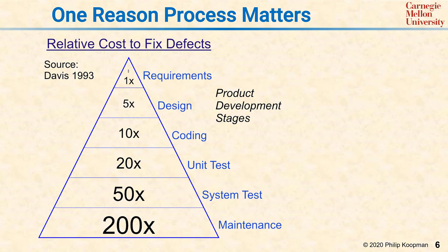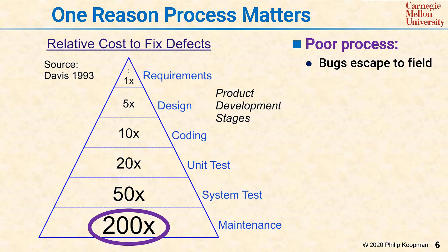Bugs introduced later, such as a coding bug, similarly multiply out depending on how long it takes to fix them. That sets aside the cost in brand tarnish and other issues that can be a real problem if you ship bugs out to the field. If you have poor process, you're likely to be finding a huge number of bugs in maintenance where they're incredibly expensive to fix. If you improve your process a bit, you can find them earlier and have better quality software at lower cost.